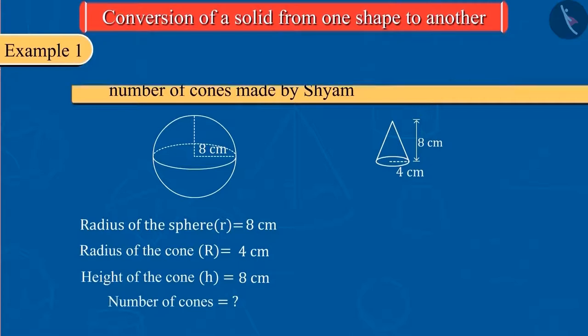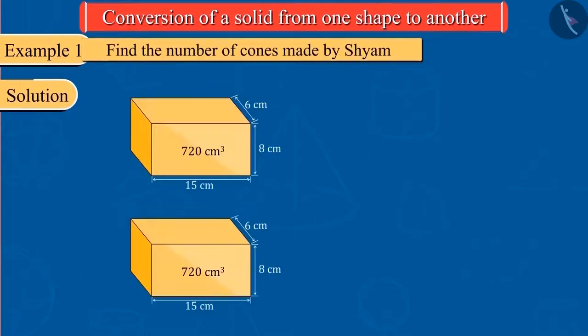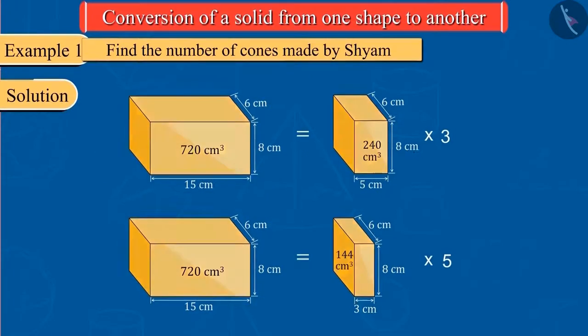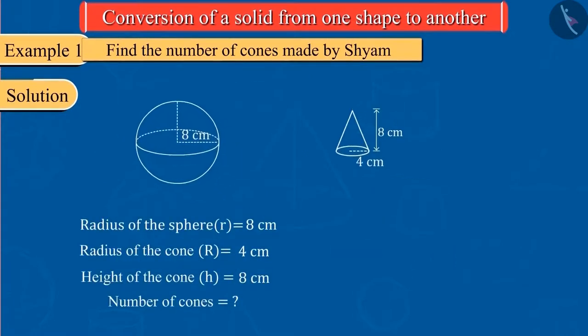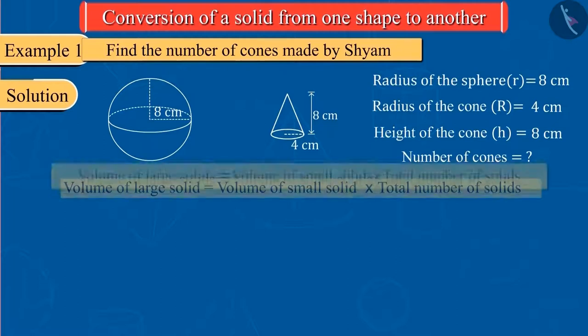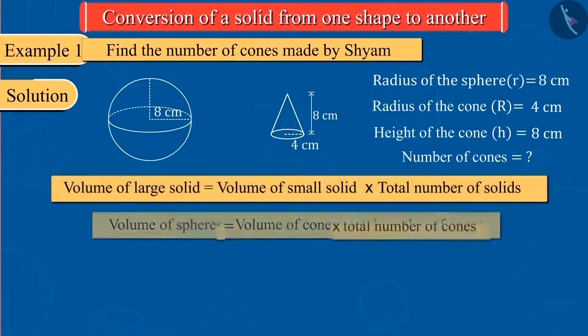We learned in the previous video that if a solid is converted into smaller solids of equal measure, the product of the volume of the smaller solids thus formed and the total number of smaller solids is equal to the volume of the larger solid. Here, we have big solid sphere and small solid cones. Therefore, we can also write this statement as follows.